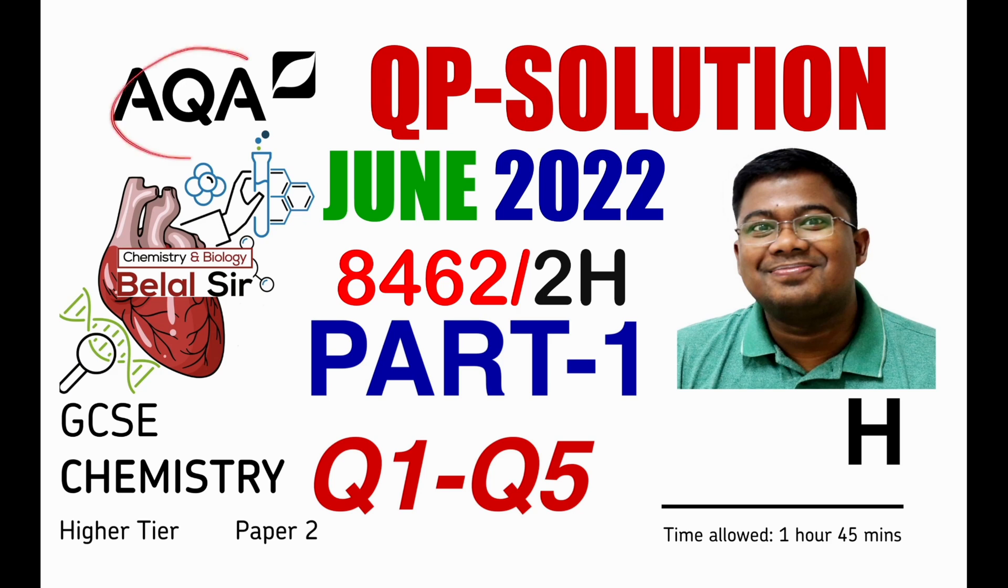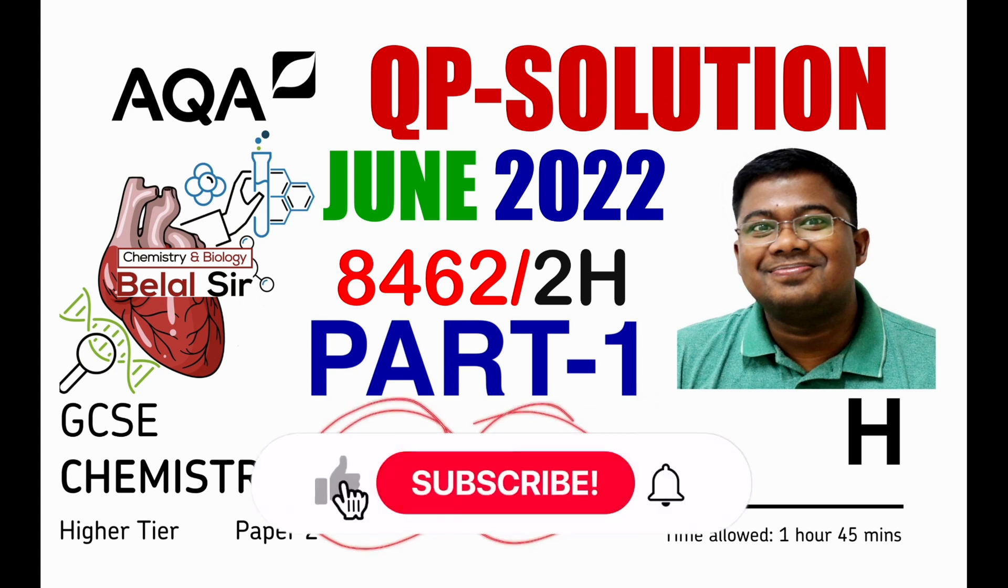Hi everyone. Today we're going to be solving AQA GCSE Chemistry Higher Tier Paper 2. In this video we're solving June 2022. This is part 1 of the question paper where we're going to be solving from question number 1 to question number 5.